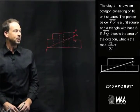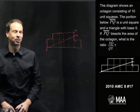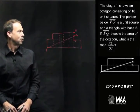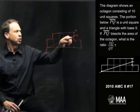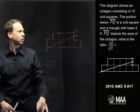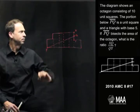The diagram shows an octagon consisting of 10 unit squares. The portion below PQ, that line segment PQ, so here's the diagram. The portion below line PQ is a unit square and a triangle, apparently, with base 5.